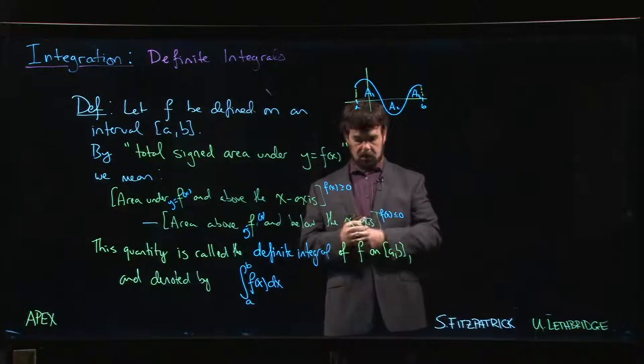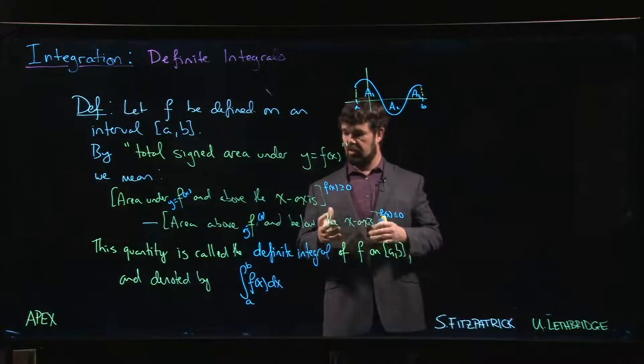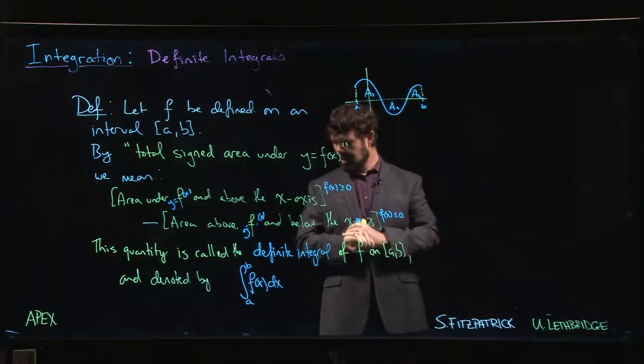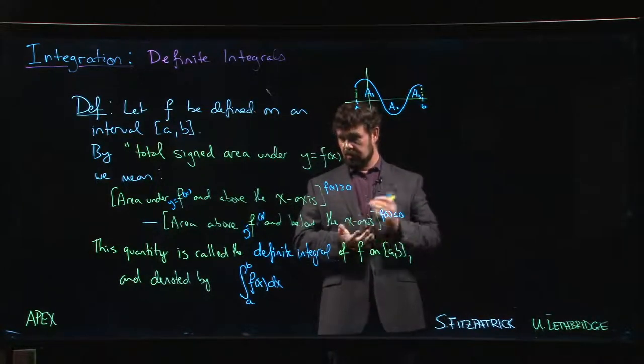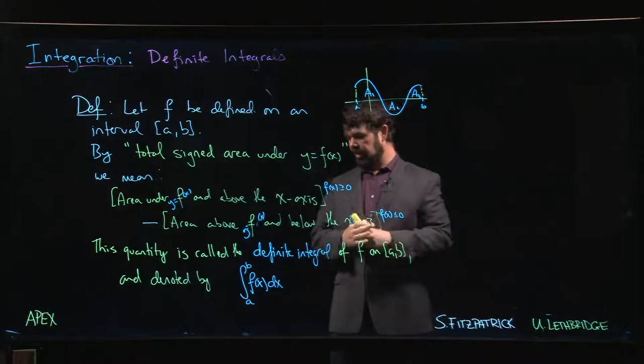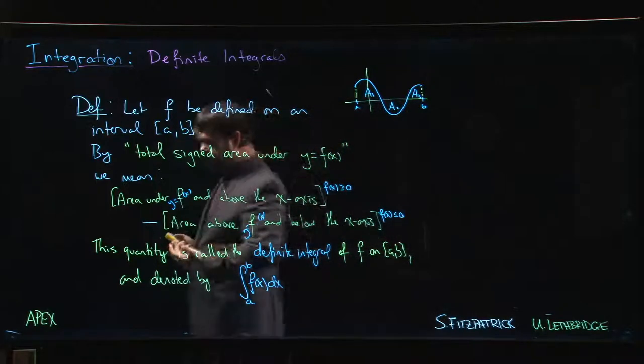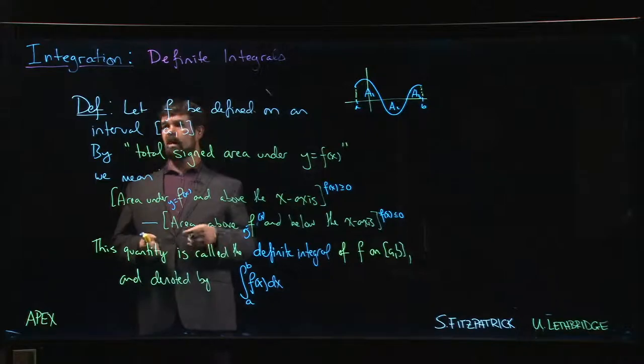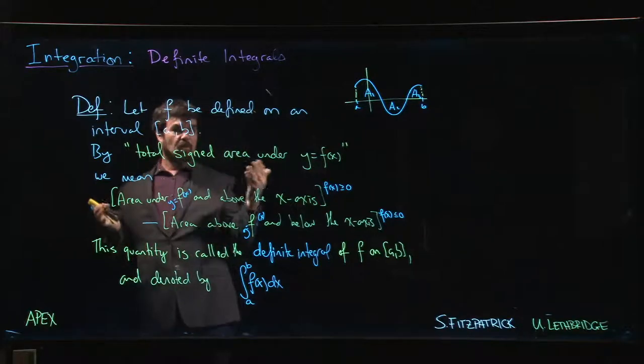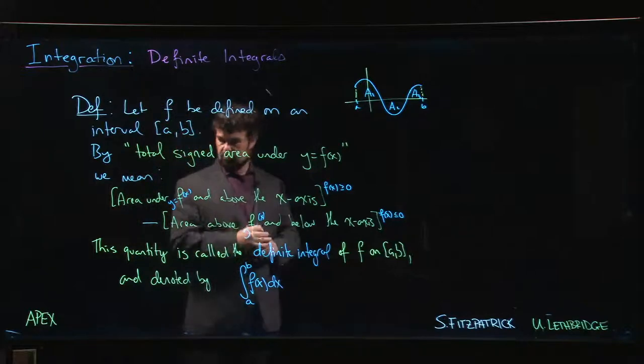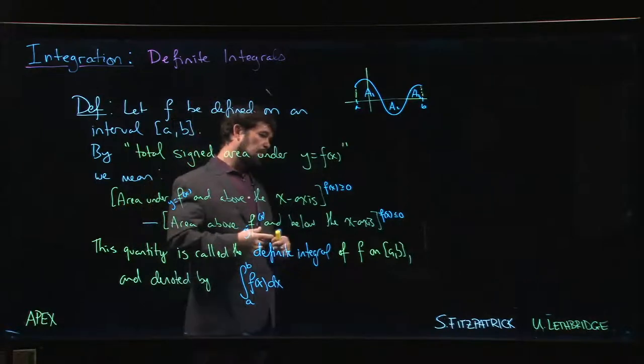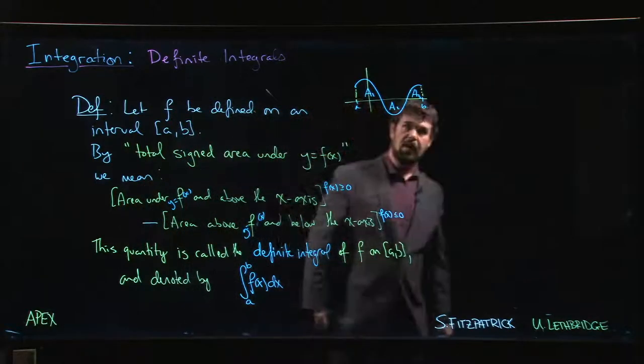So this is the definite integral of our function on the interval - it's just the difference between these two areas. Now one of the reasons why you don't necessarily find this as the definition of the definite integral is there are some catches. One being that just having a function which is defined on the interval doesn't guarantee that you get something that makes sense as area under a graph. You could have some very badly behaved functions.